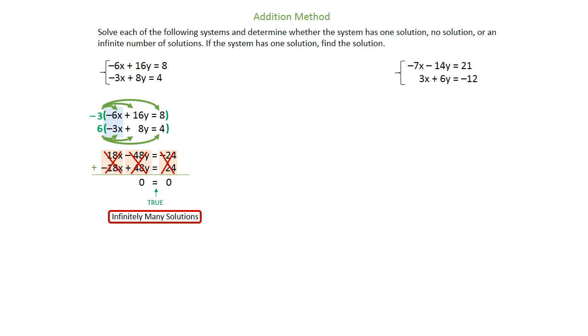Let's look at the example on the right-hand side of the screen now: negative 7x minus 14y equals 21, and 3x plus 6y equals negative 12. Let's pick a variable. This time we're going to do x's again, just because the numbers are slightly smaller. Put your parentheses on and highlight those values and swap them.